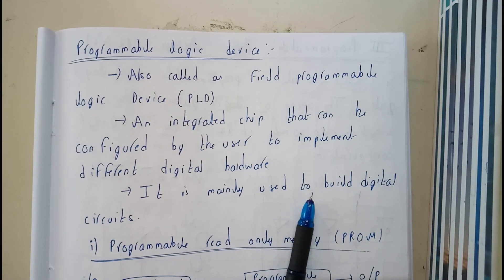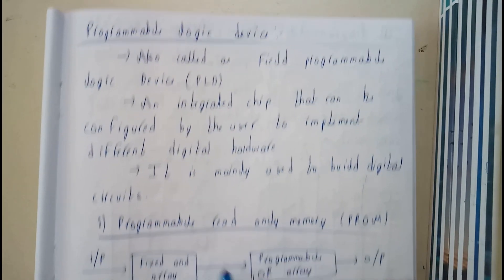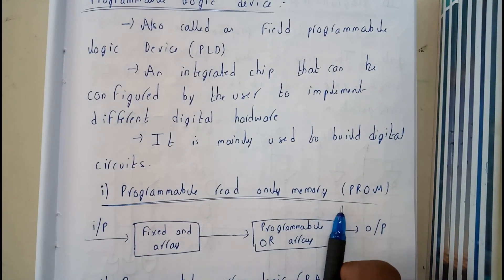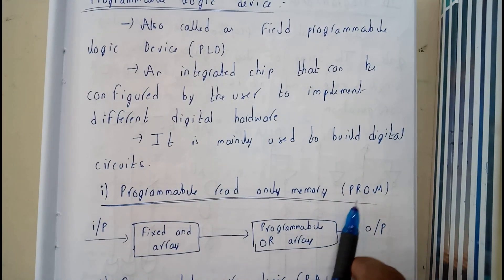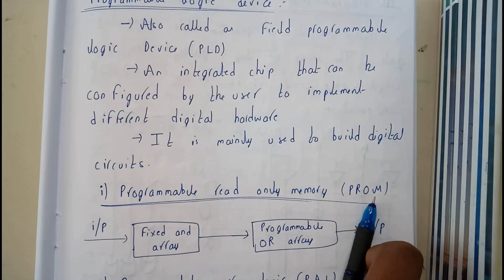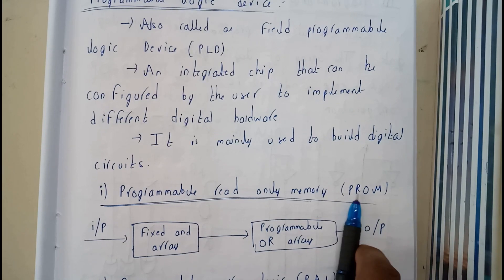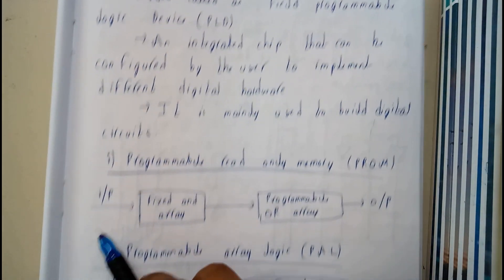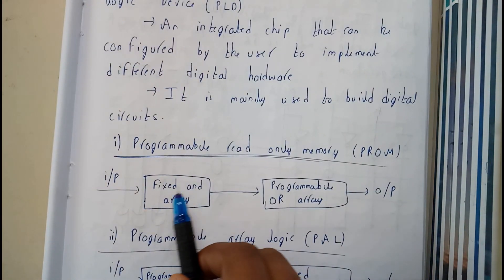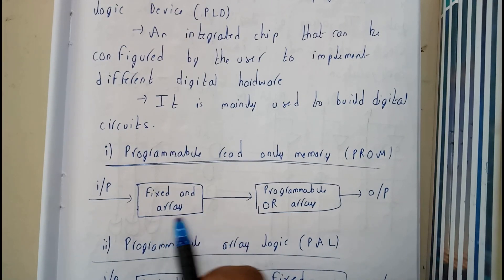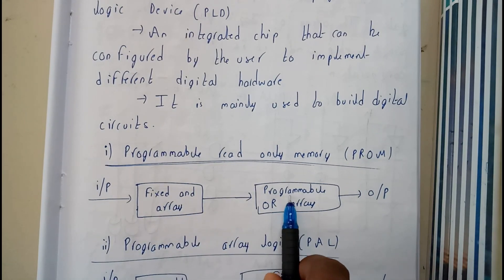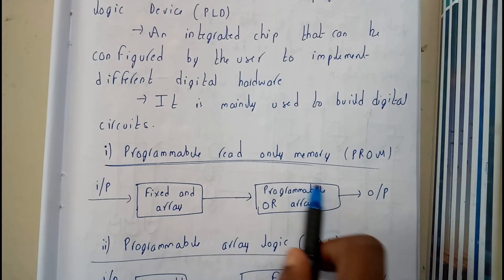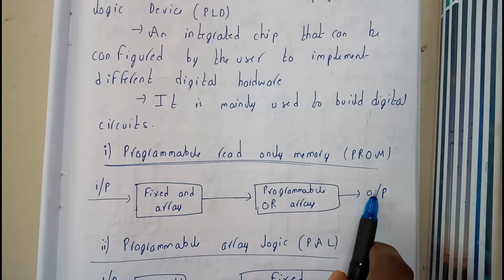Basically, PLDs are divided into three types. The first one is the Programmable Read Only Memory, that is PROM. In PROM, the input is given to a fixed AND array and this output is given to a programmable OR array, and we get the output.